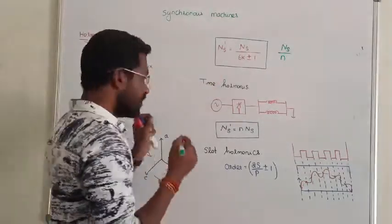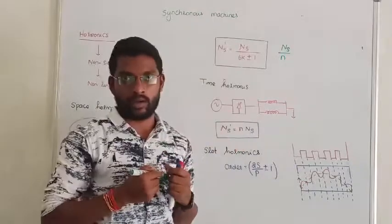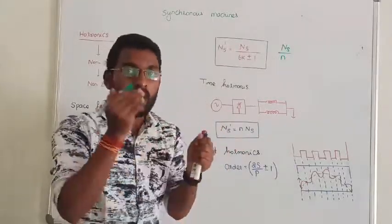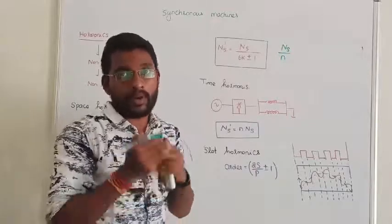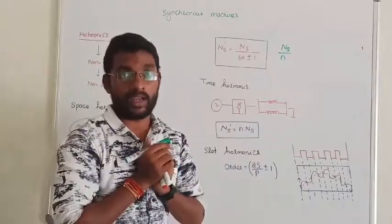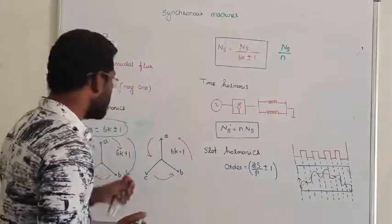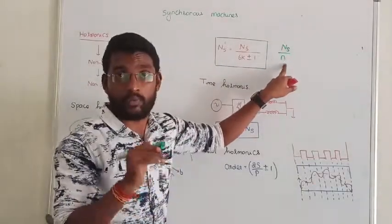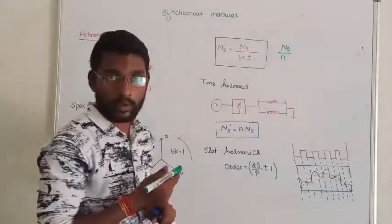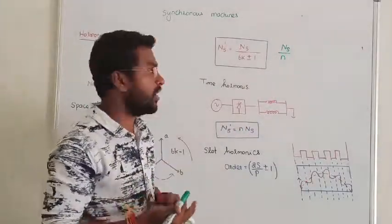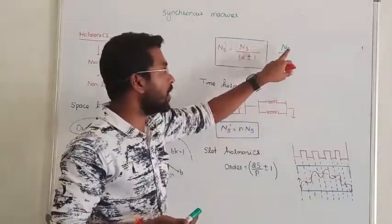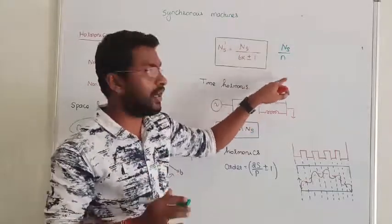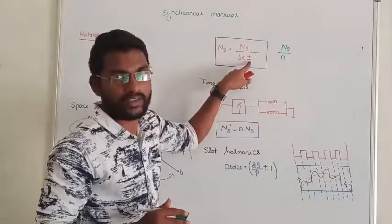Space harmonic affects one machine. Initial synchronous speed of the machine is 3000 RPM. Now it is getting affected by the 7th harmonic. The new synchronous speed of the machine is: simply take the synchronous speed and divide by the order. In space harmonics, the new synchronous speed is Ns divided by N. So for the 7th harmonic it becomes 3000/7, and for the 5th harmonic it becomes 3000/5.